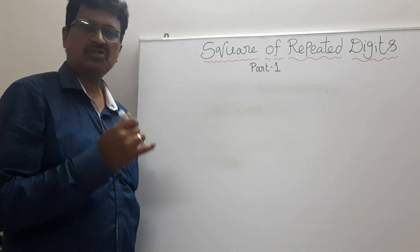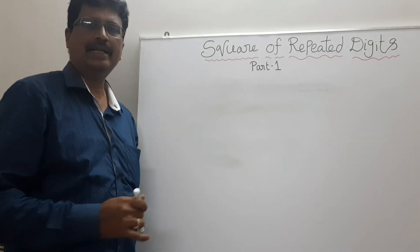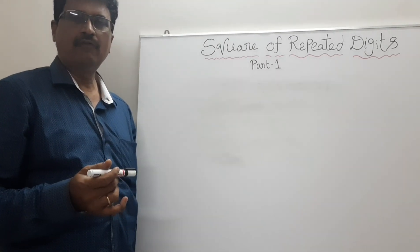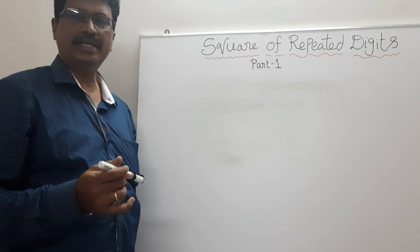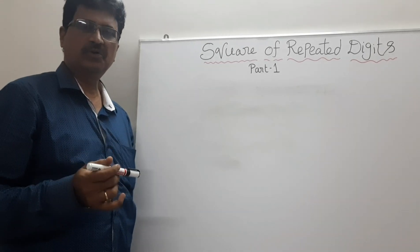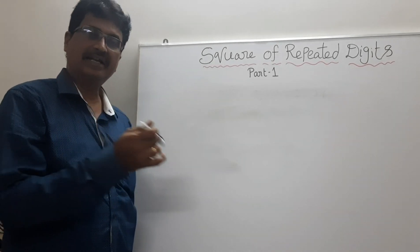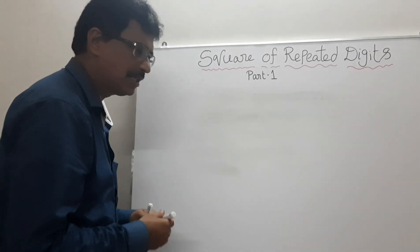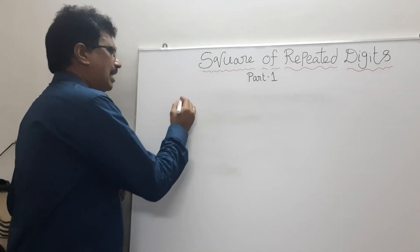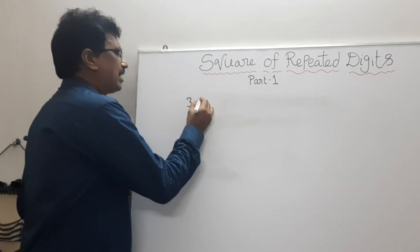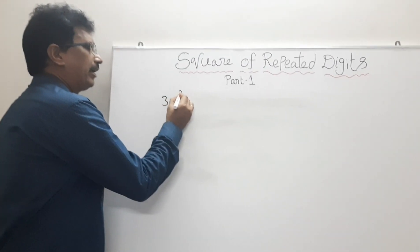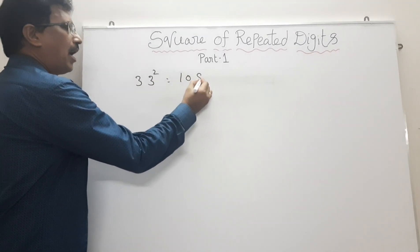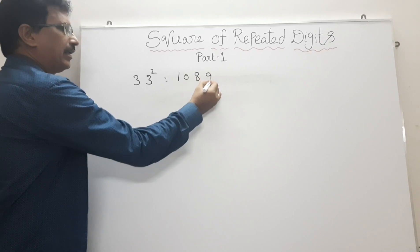These squares can be calculated in an easy way without using any calculator, without using calculations also. How it is possible? Just listen here. 33 squared equals to 1089.